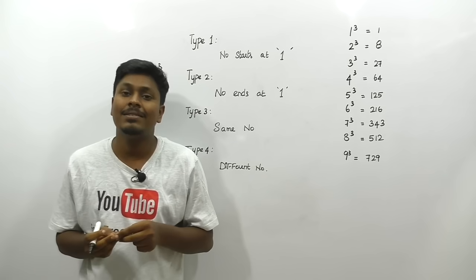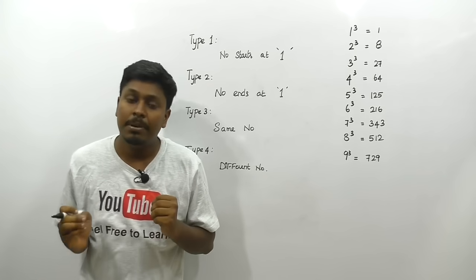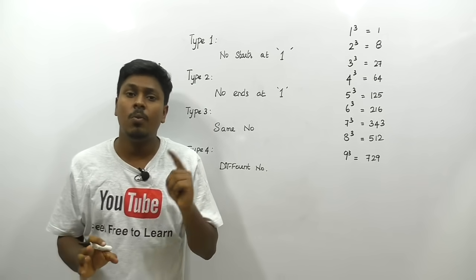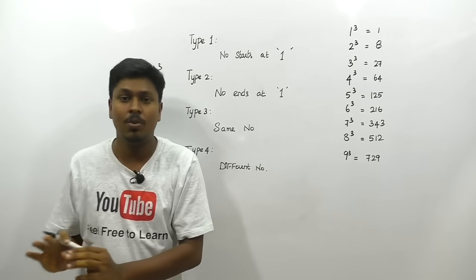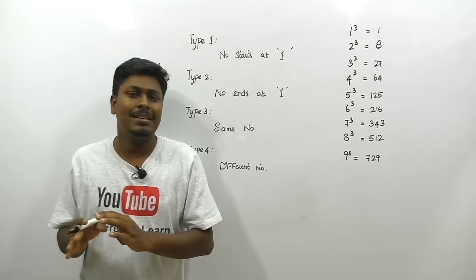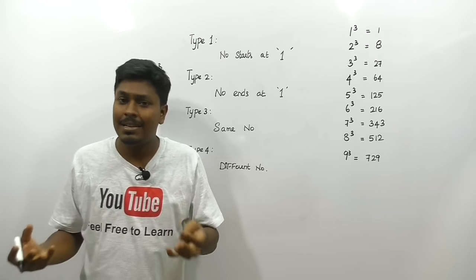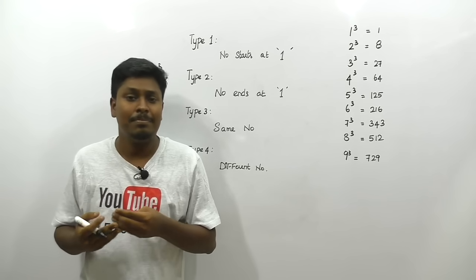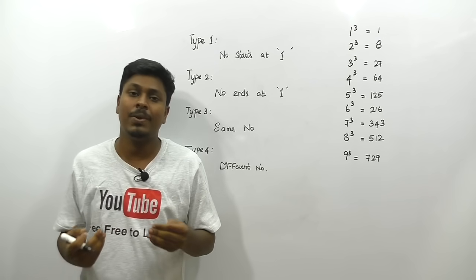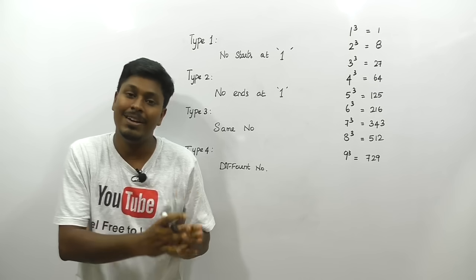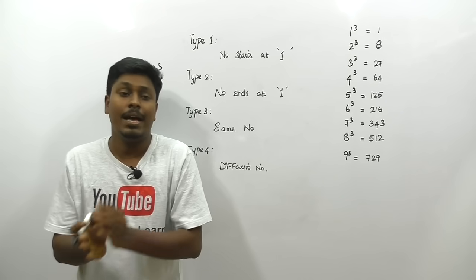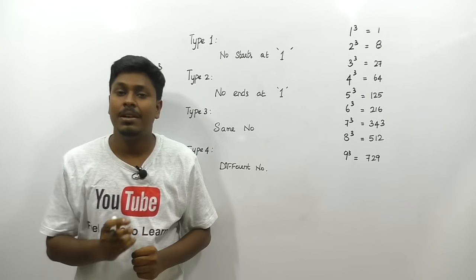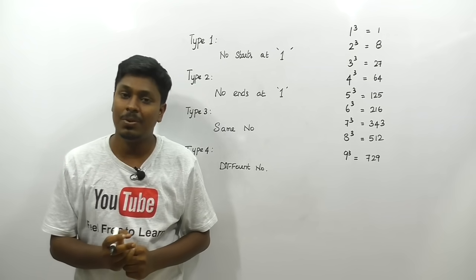If you're preparing for bank exams, I suggest learning 1 to 99 cubes — that's enough. Don't worry about numbers beyond 99, as previous year bank question papers clearly show questions are between 1 to 99 cubed. Watch this entire video and I hope you'll learn many new things.